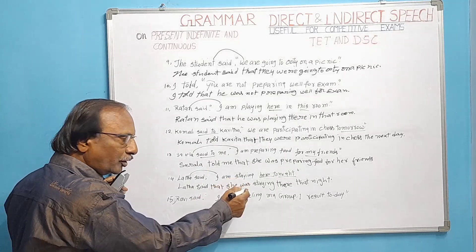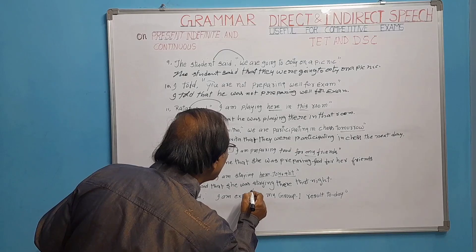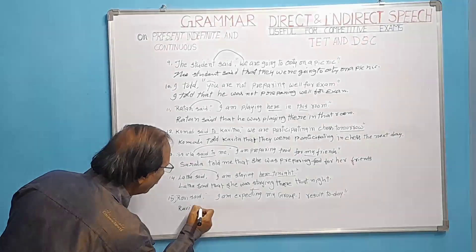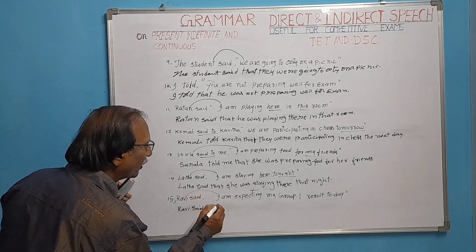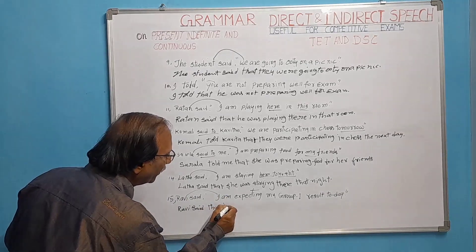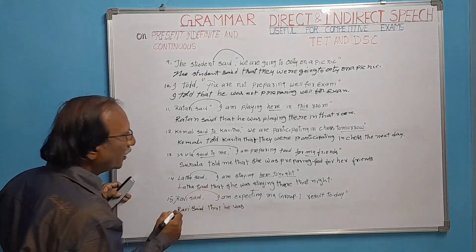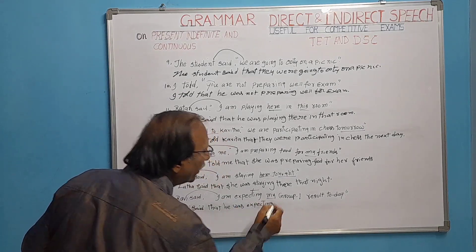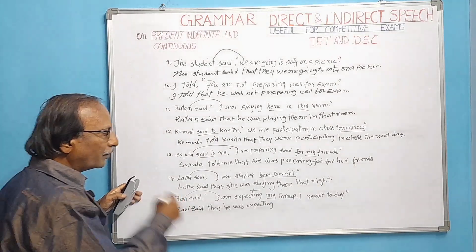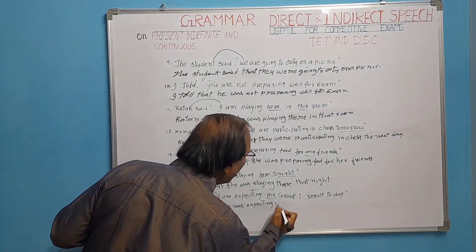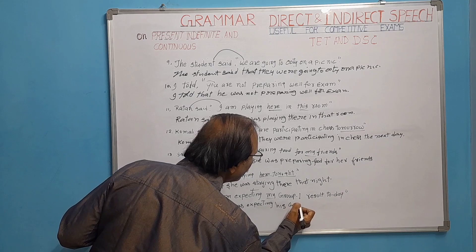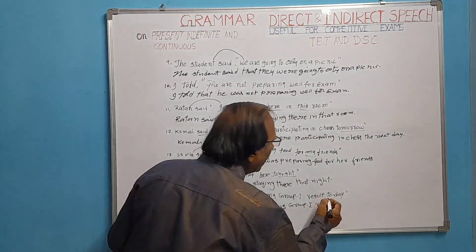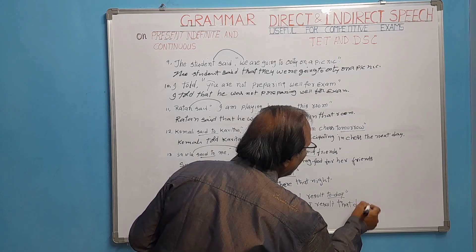Ravi said, 'I am expecting my group one result today.' Present continuous changes to past continuous. We add 'that.' 'I' refers to Ravi, so the subject becomes 'he.' 'My' refers to Ravi, so it changes to 'his.' 'Today' changes to 'that day.' Result: Ravi said that he was expecting his group one result that day.